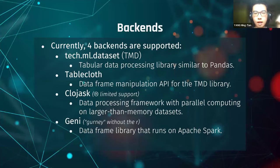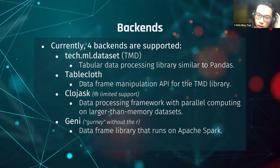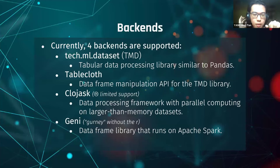Currently DataJure supports four backends. The first is tech.ml.dataset — a tabular data processing library similar to Pandas. The second is Tablecloth — a data frame manipulation API for the TMD library, essentially a wrapper of TMD. The third is Clojask — a data processing framework with parallel computing on larger-than-memory datasets, also developed at HKU Business School. However, DataJure doesn't yet have full support for Clojask because it depends on external files. The fourth backend is Geni (or Jenny), a data frame library that runs on Apache Spark.